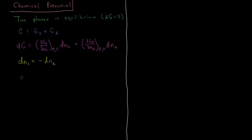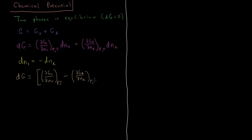Given that fact, we can substitute minus dN_S for dN_L. Then the change in our Gibbs energy, dG, is going to be the partial derivative of G_S with respect to N_S at constant P and T, minus the partial derivative of G_L with respect to N_L at constant P and T, all times dN_S. We've factored out the change in the number of particles in the solid, substituting in that minus sign.